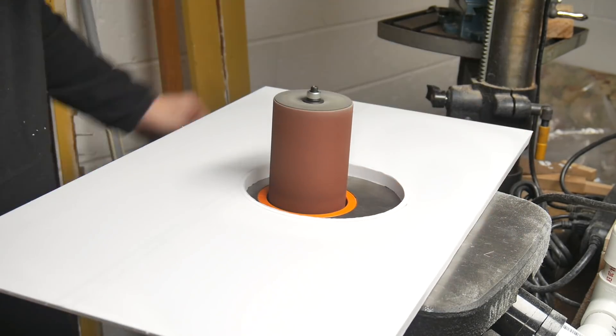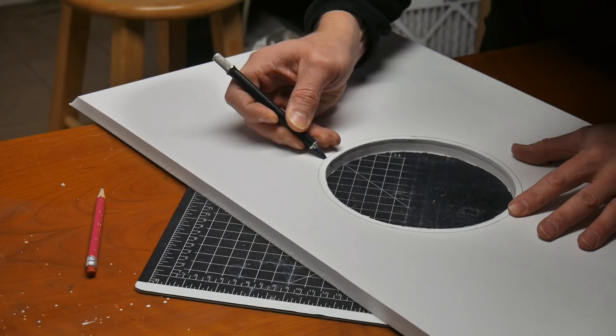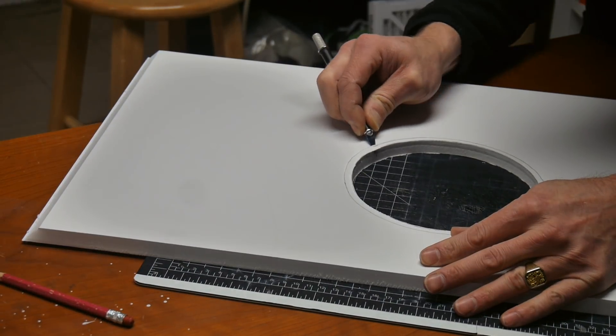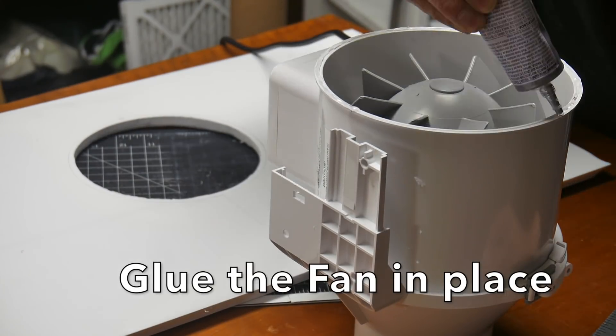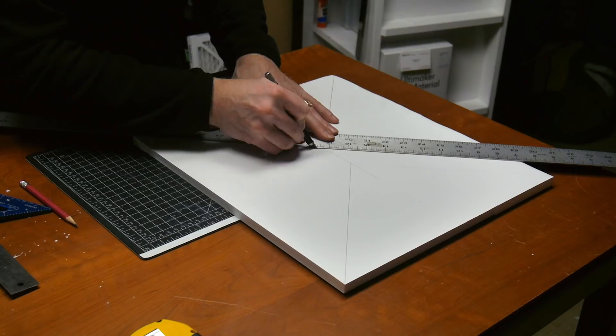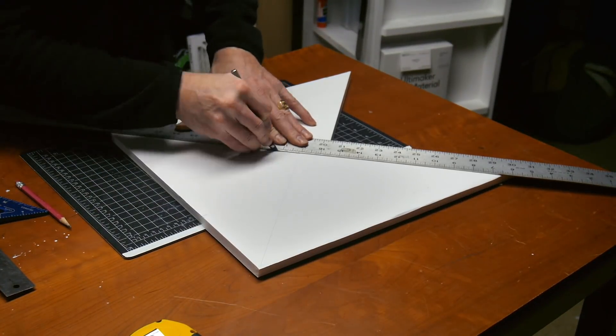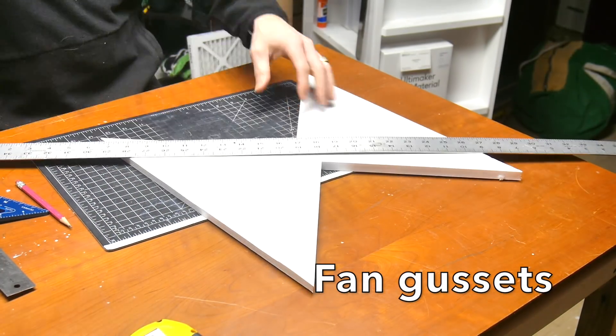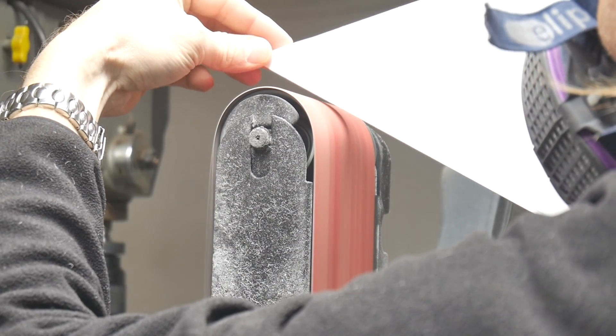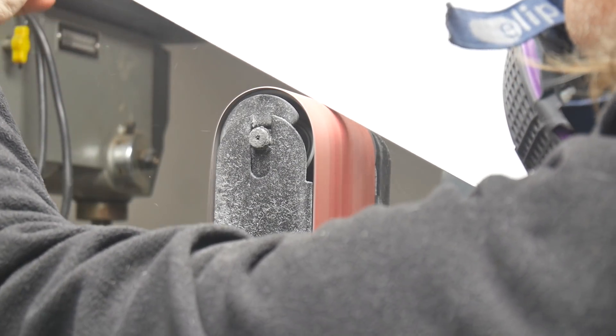To sand out the inside of the circle, I use my oscillating spindle sander, and then I'm going to bevel the bottom inside edge just to have a little bit better airflow. I'm going to use some E6000 to glue the fan onto the foam core.